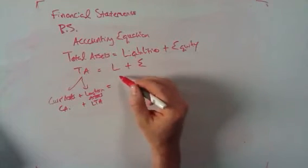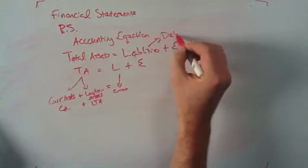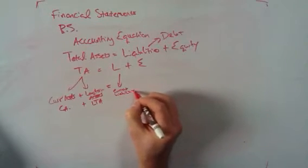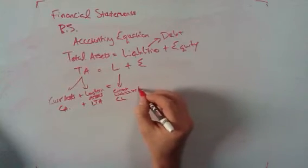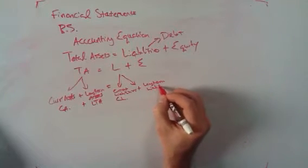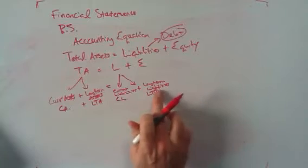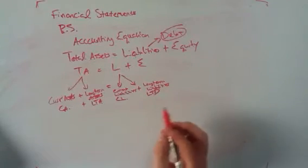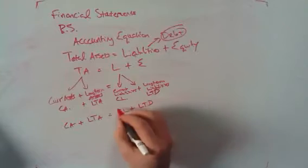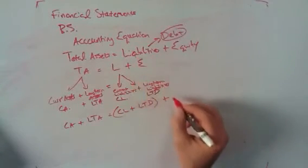Now what about liabilities? Liabilities are kind of the same thing. By the way, liabilities and debt are interchangeable — they are the same things. We have our current liabilities, which we can call CL, and then we also have our long-term liabilities, which is LTD — the D stands for debt. So now we see that CA plus LTA equals CL plus LTD — that's our total liabilities plus equity.